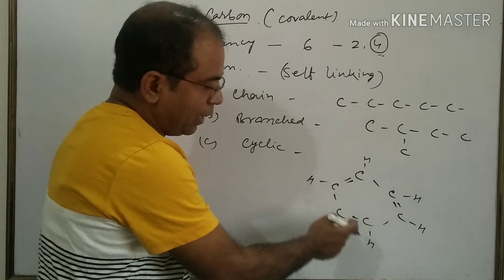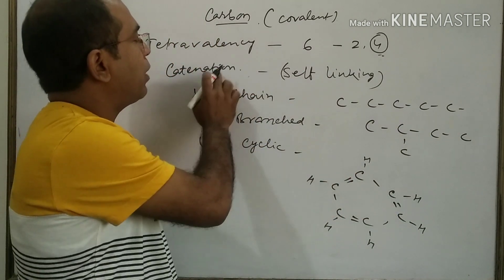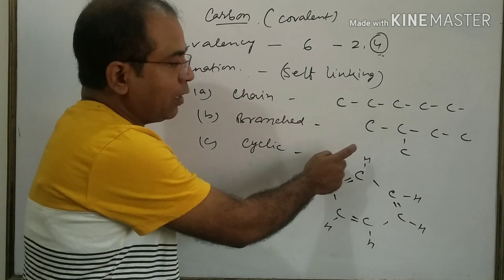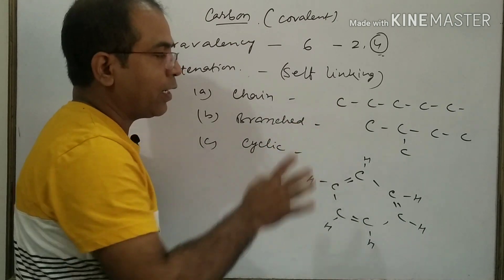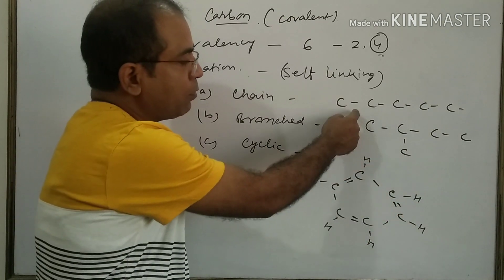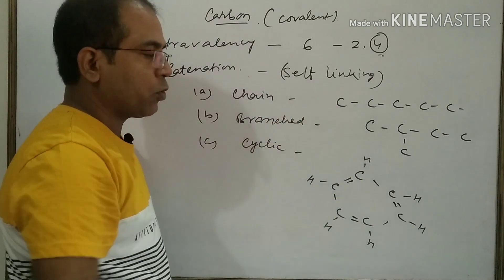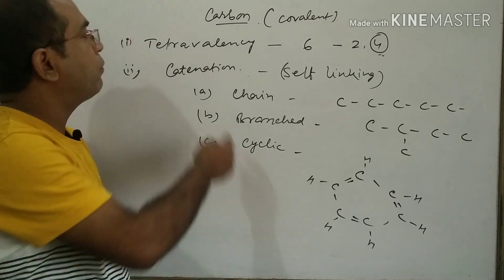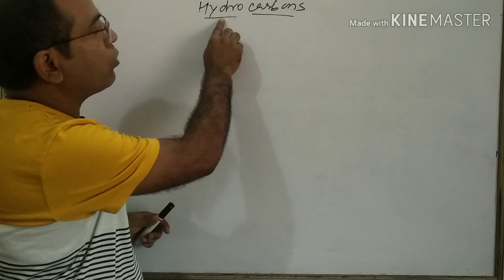This cyclic combination of carbon atoms is also called catenation, but it is cyclic. So these are the three cases: the first case is chain, the second is branched, and the third is cyclic. These are the two unique properties of carbon: the first is tetravalency and the second is catenation.